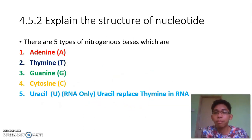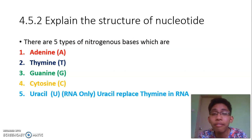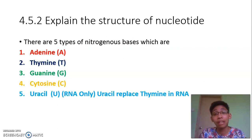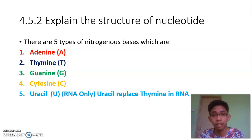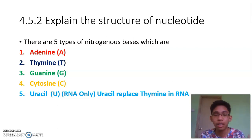Now the differences between nitrogenous bases. For your syllabus there are five types of nitrogenous bases: adenine (A), thymine (T), guanine (G), cytosine (C), and uracil (U). Uracil is only available in RNA, not in DNA.